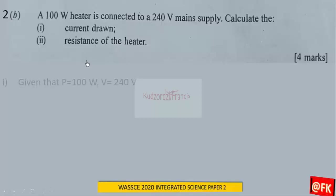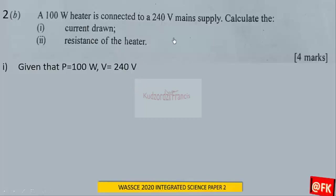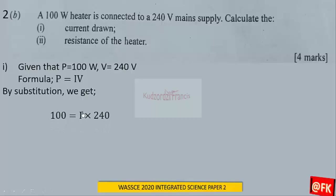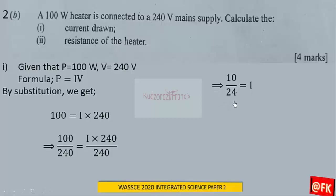From the question, power is given as 100 watts and voltage is 240 volts. To get the current drawn, we use the electric power equation: P = IV. By substitution, 100 = I × 240. To get the current, we divide through by 240, which gives us 10 over 24.